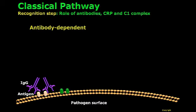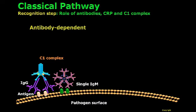In this example, we can see that two immunoglobulins — two IgGs — are recognizing antigens on the cell surface of pathogens. When two IgGs are close enough, C1 will be able to bind to these antibodies and, as a consequence, recognize the pathogen indirectly. C1 can also recognize a single IgM bound to pathogens.